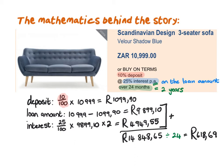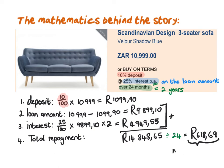Let's consider all the steps we went through. Firstly, we calculated the deposit. Secondly, we determined the loan amount. Thirdly, on the loan amount we calculated the interest added to your payment. Fourthly, we calculated the total repayment — the total amount without the deposit that you pay over the set period of time. Lastly, we divided it into equal monthly payments to get the monthly repayment.